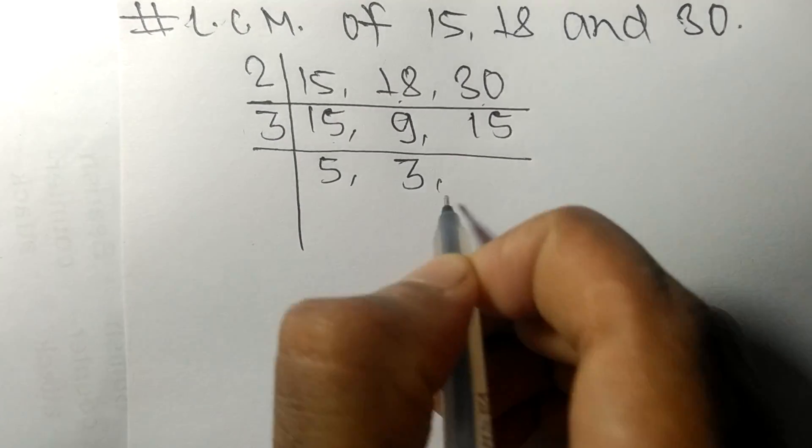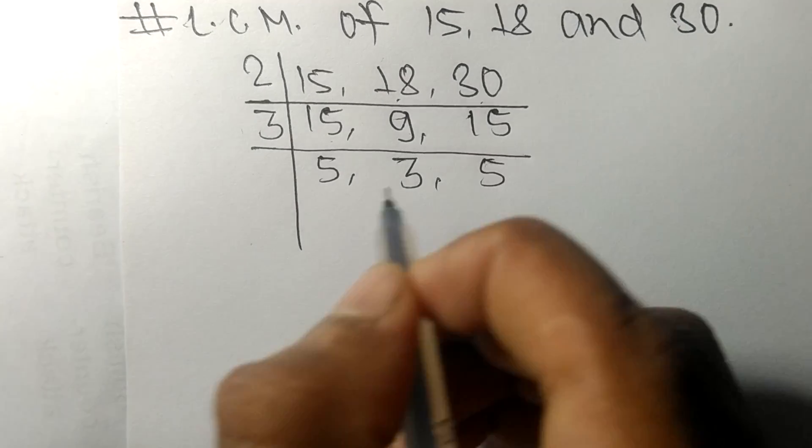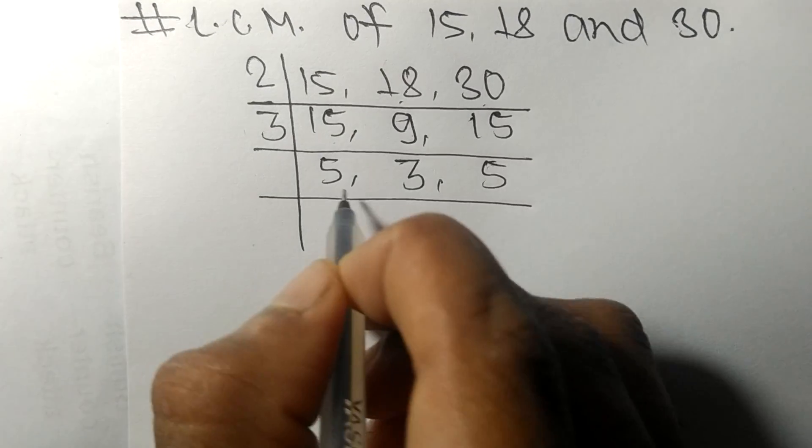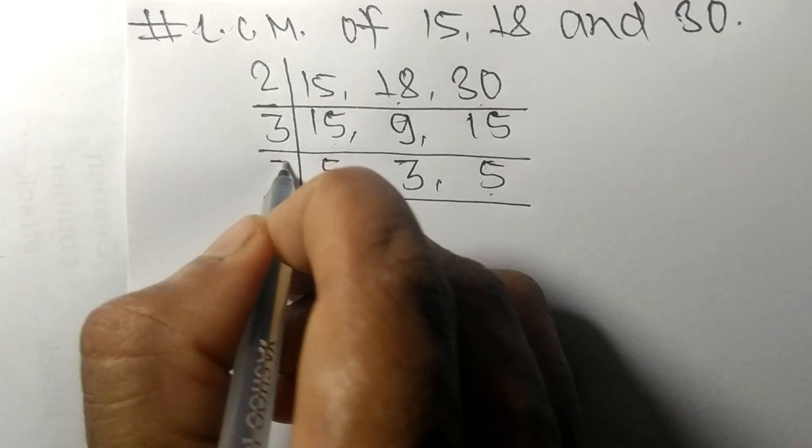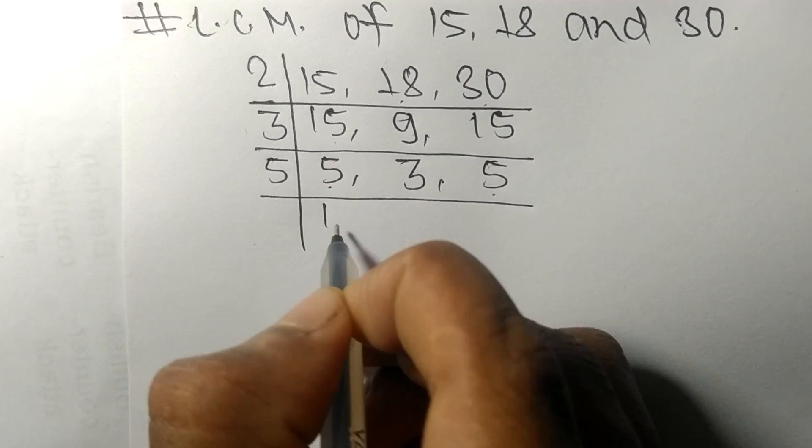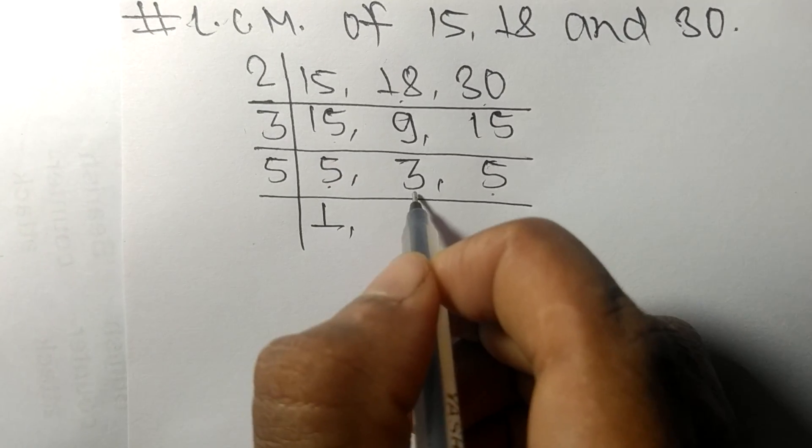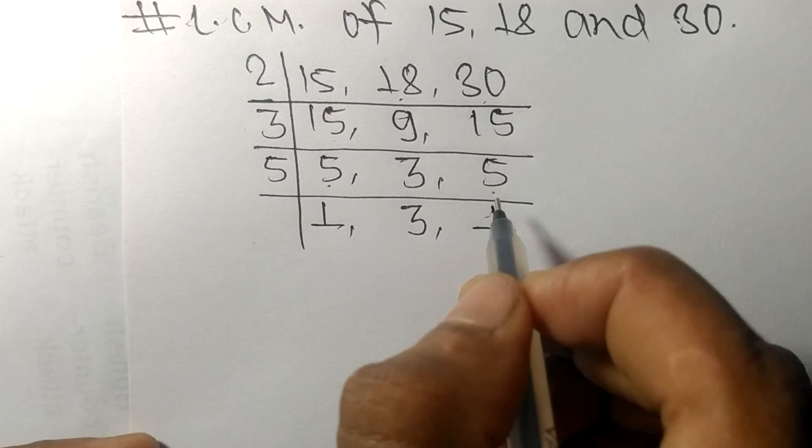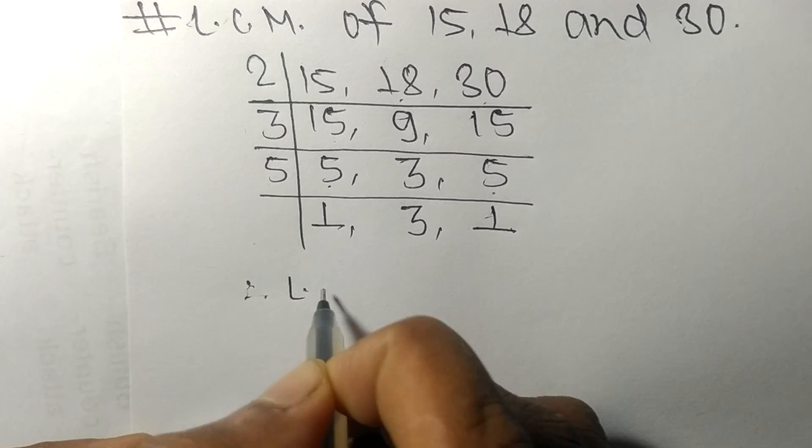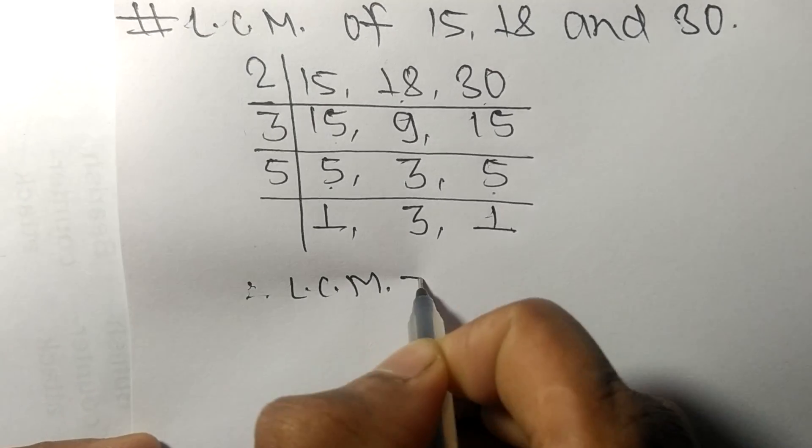Now these both 5s are exactly divisible by 5. 5 times 1 means 5. 3 is not divisible, so it remains the same. 5 times 1 means 5. So the LCM is...